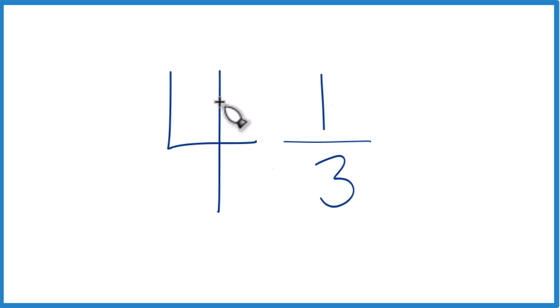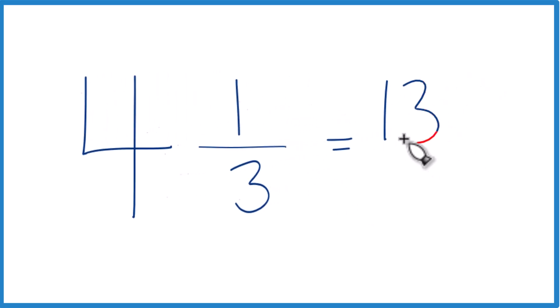Here's how you do it. You take the whole number, 4 times 3, that's 12, plus 1. That gives us 13, that's our numerator. And you just bring the denominator 3 across.